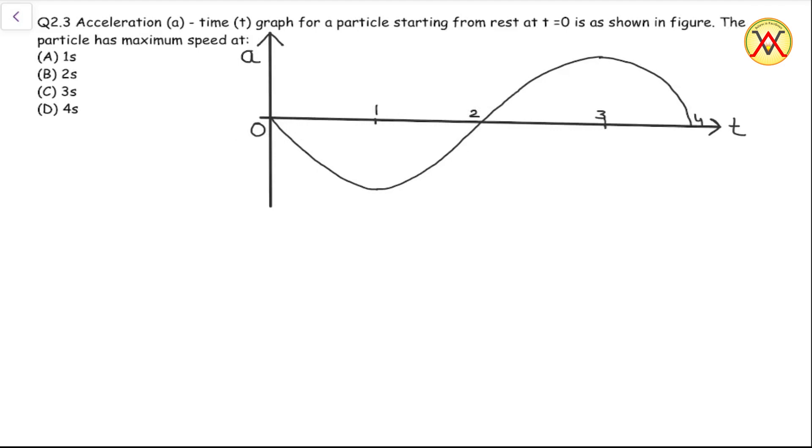This is question number 2.3 from the book University Physics. Here we are given an acceleration-time graph for a particle which starts from rest at time t equal to zero, and we need to find out when this particle will have maximum speed.